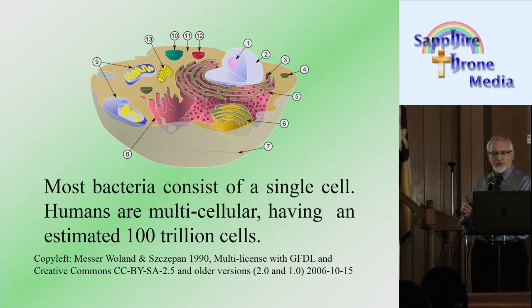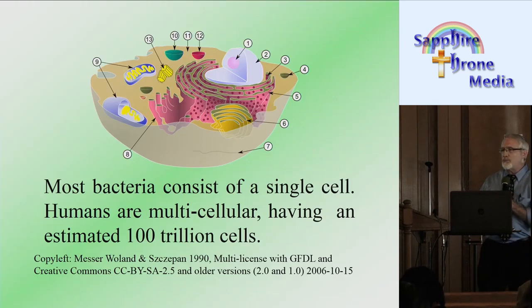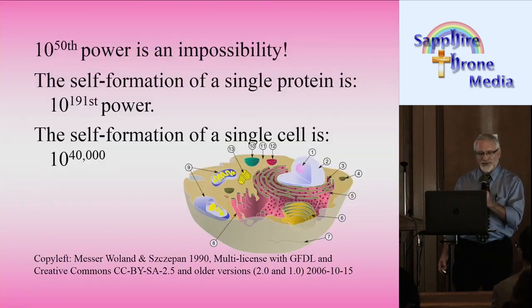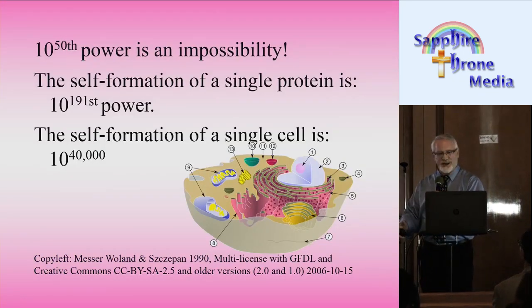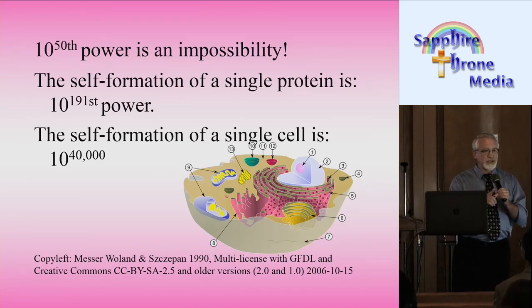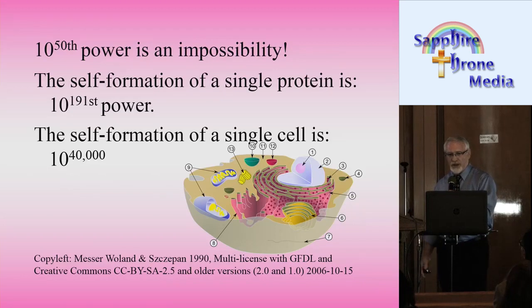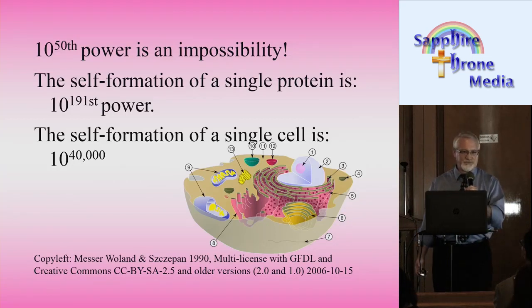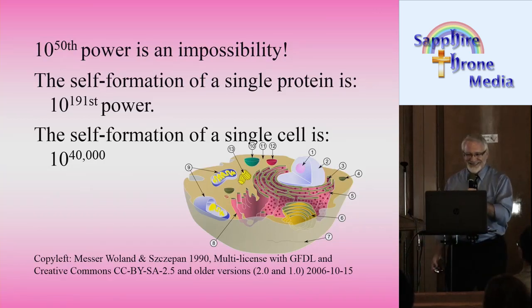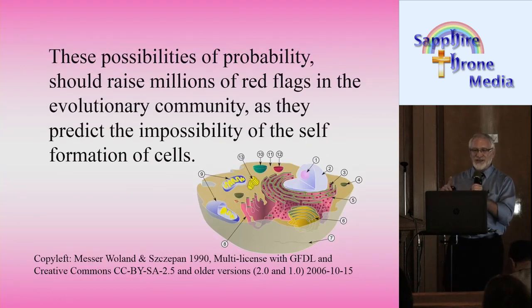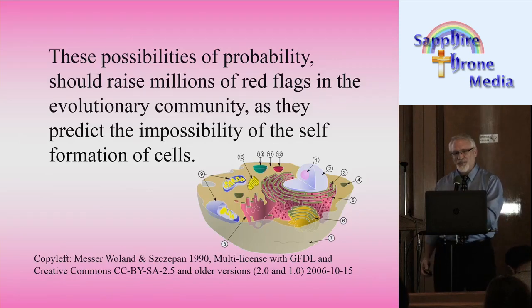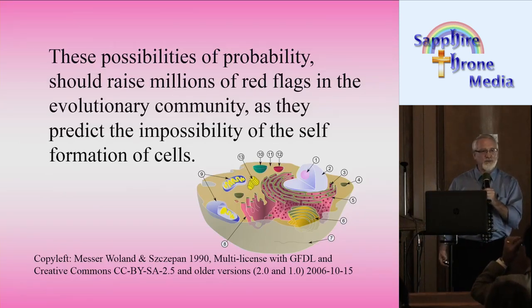Most bacteria consist of a single cell. Humans are multicellular, having an estimated 100 trillion cells in our bodies. Remember, 10 to the 50th power is an impossibility. The self-formation of a single protein is 10 to the 191st power. The self-formation of a single cell is 10 to the power of 40,000. I wonder if this is why man can't create life.